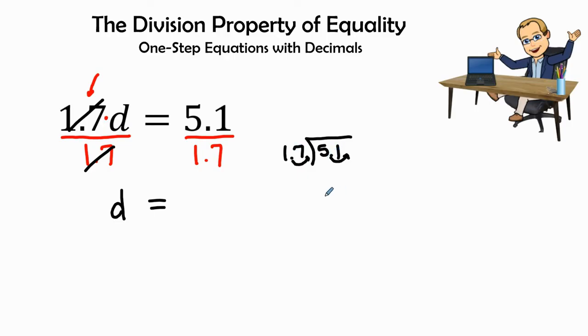I can say 17 times 2 is 34, and plus 17 more would be 51. So it would go in 3 times. So 1.7 will go into 5.1 three times.